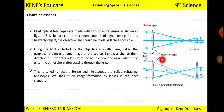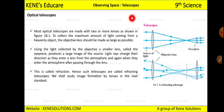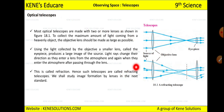The rays change direction two times: first when they enter the lens from the atmosphere, and second when they enter the surrounding atmosphere from the eyepiece. We call this the refraction process. These optical telescopes are also called refracting telescopes because they refract the light obtained from the source. We shall study image formation by lenses in the next standard — in your 10th standard.